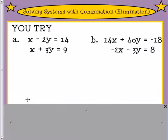Go ahead and you try these two. Think of numbers that would be easy for you to multiply by so that way you can eliminate a variable in both. Pause the video. I'm going to show you how to do this one.